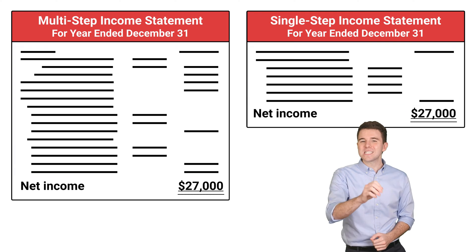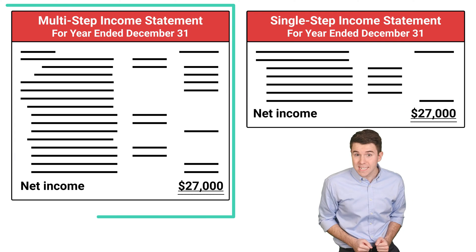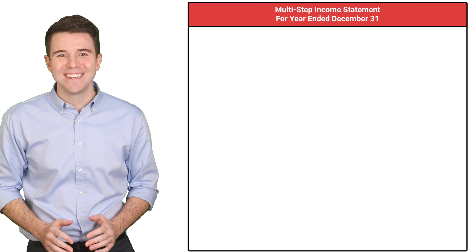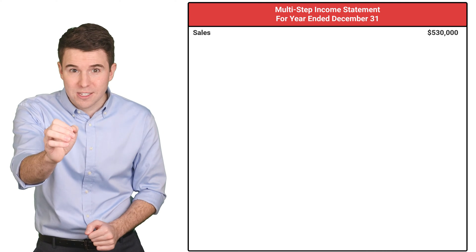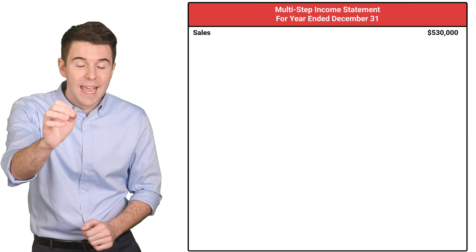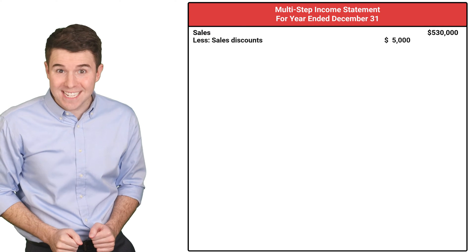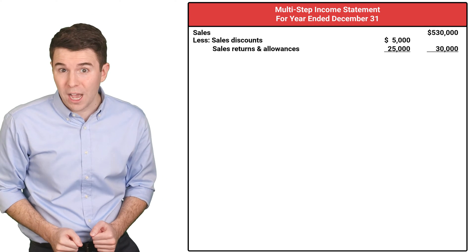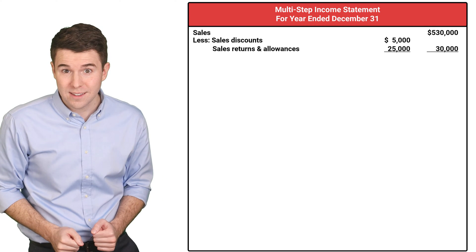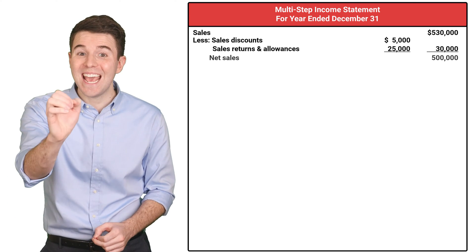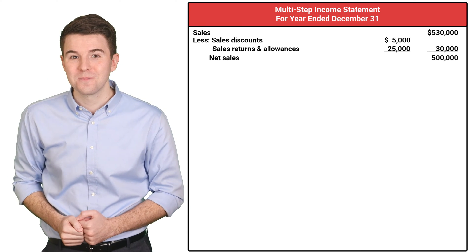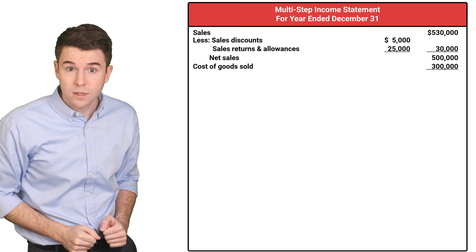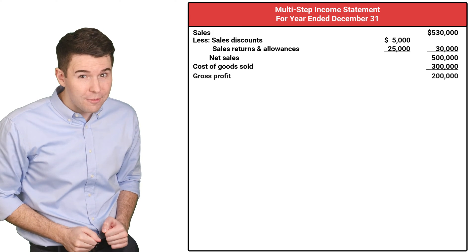So first, let's cover the multi-step income statement with an example. The statement begins with sales and subtracts sales discounts and sales returns and allowances. This gets us net sales. Next, we subtract cost of goods sold to get gross profit.